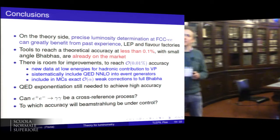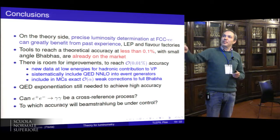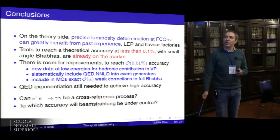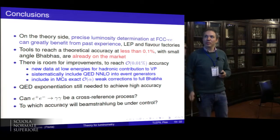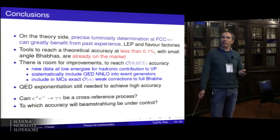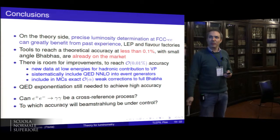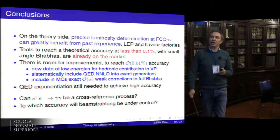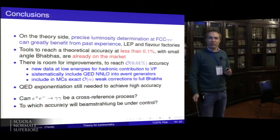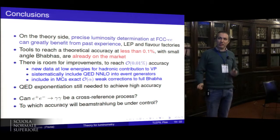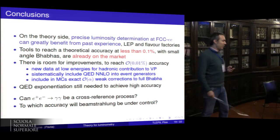In conclusion: the FCC can benefit from the past experience on the calculation for the Bhabha cross-section at LEP and flavor factories. The tools to calculate the cross-section with accuracy at the level of 1 per mil are already on the market, and there is room for improvements. For example, with low-energy data we can have a smaller error on the vacuum polarization; we can include systematically the NNLO corrections into the event generators; and there is now the technology to calculate exact order-alpha weak corrections. QED exponentiation is always needed in order to reach this accuracy.